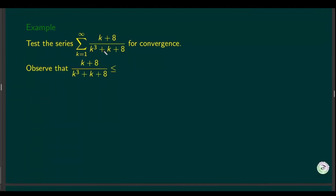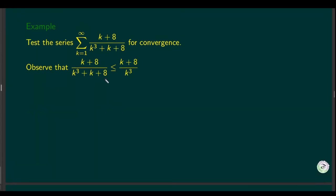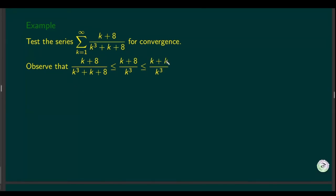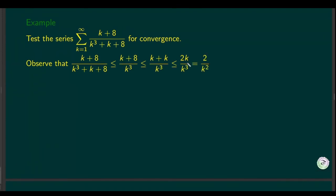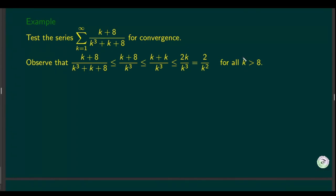We drop k plus 8 from the denominator, making the expression larger. For the numerator, we replace the plus 8 with plus k — but this is only valid when k is greater than 8, since then k > 8. We can then cancel and get 2k over k cubed, which equals 2/k². This upper bound holds for k greater than 8.